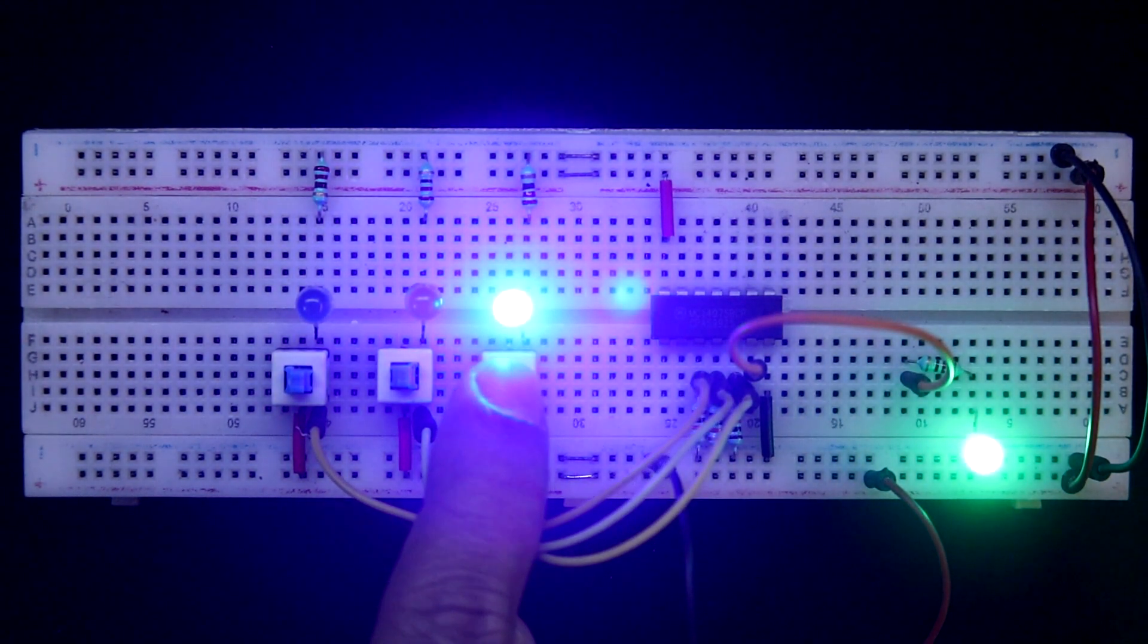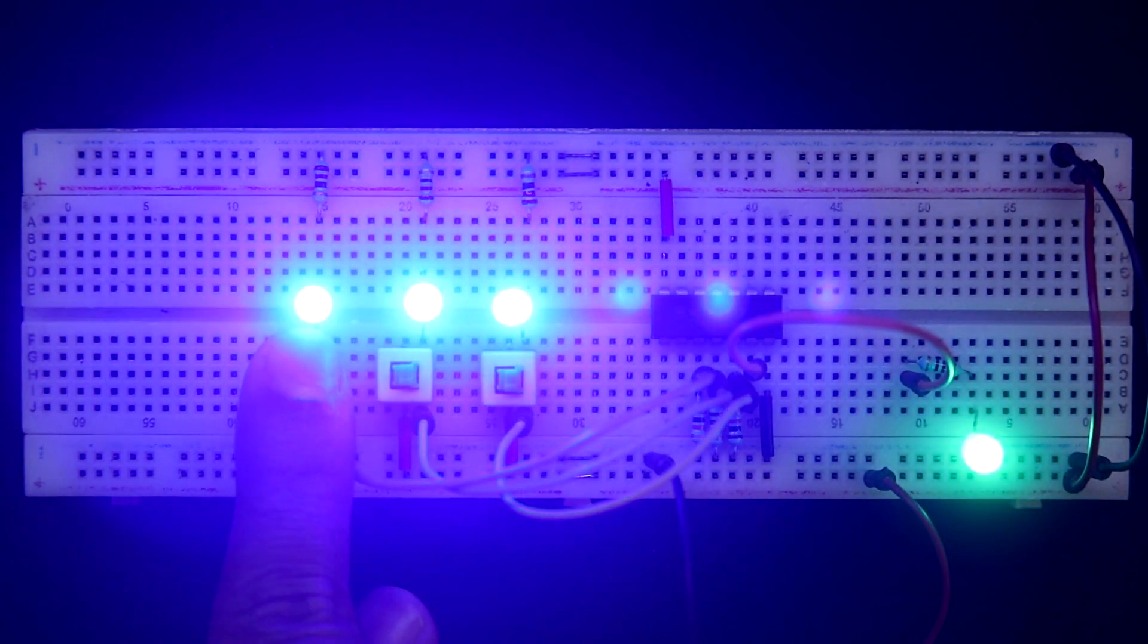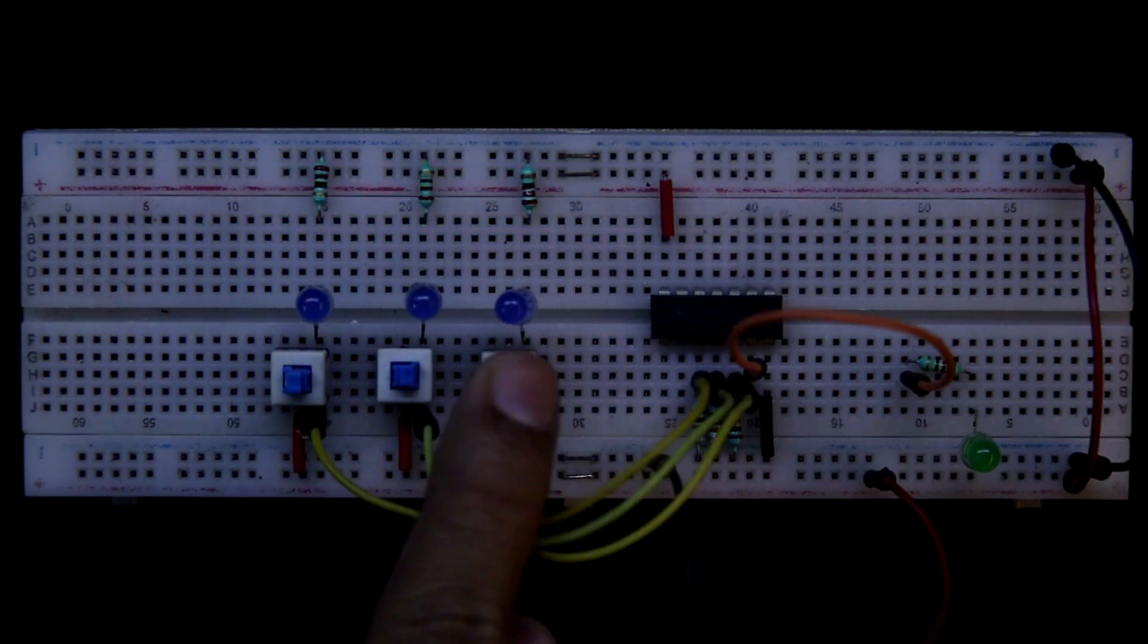Here it is 1, we are getting 1. So this is the working of OR gate.